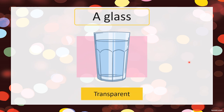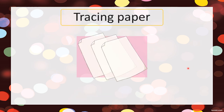A glass is a transparent object — all the light can pass through, so there is no shadow formed. And then the last one, tracing paper — tracing paper is a translucent object. It will produce a less clear shadow. Masih menghasilkan bayang-bayang, tapi bayang-bayang yang kurang jelas.